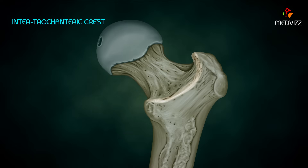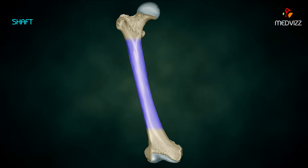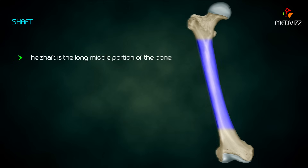The intertrochanteric crest is a smooth blunt ridge situated on the posterior surface of the junction of the neck and the shaft. The quadrate tubercle is a rounded prominence in its middle part.